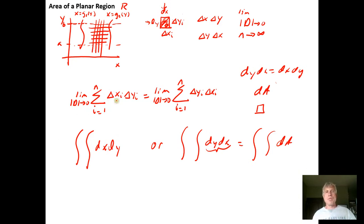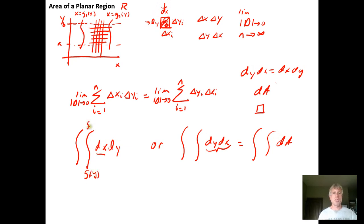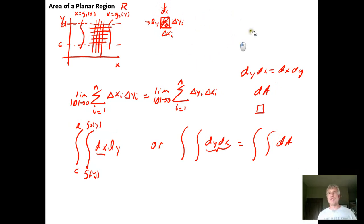Once we move to infinitely small Delta X's and Delta Y's by letting the norm go to zero, we need to control the bounds of integration. We either integrate with respect to X first, letting X run from G sub 1 of Y to G sub 2 of Y, and then integrate with respect to Y letting the Y values run from C to D.